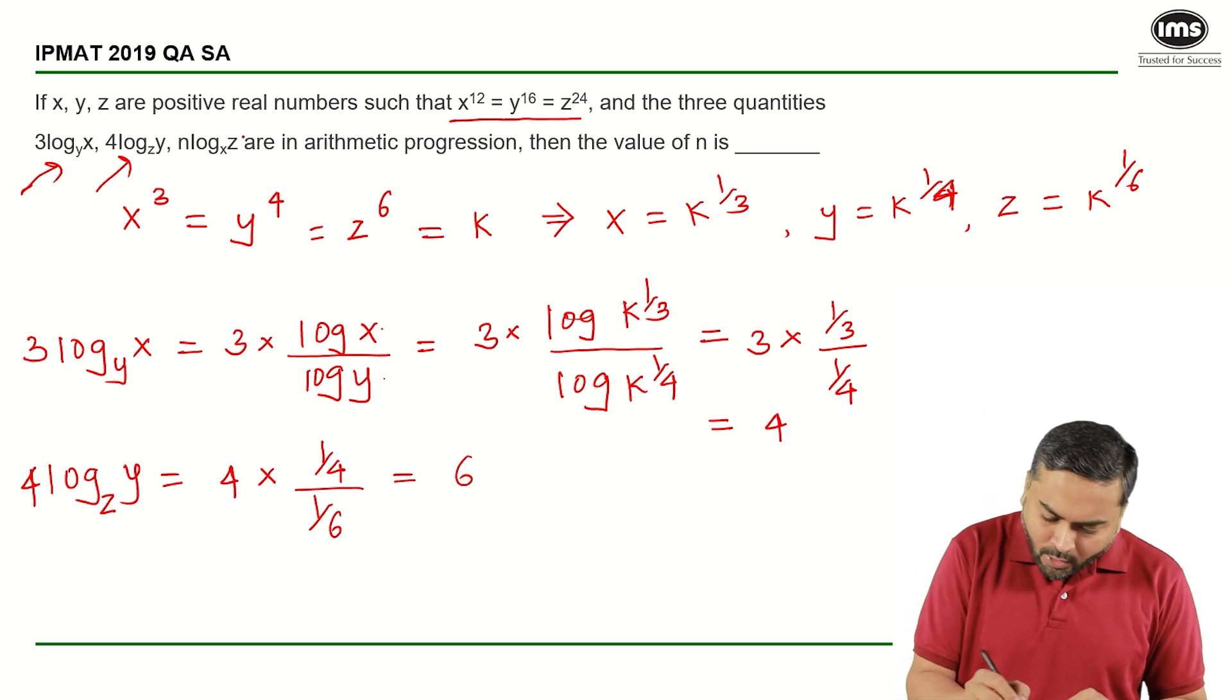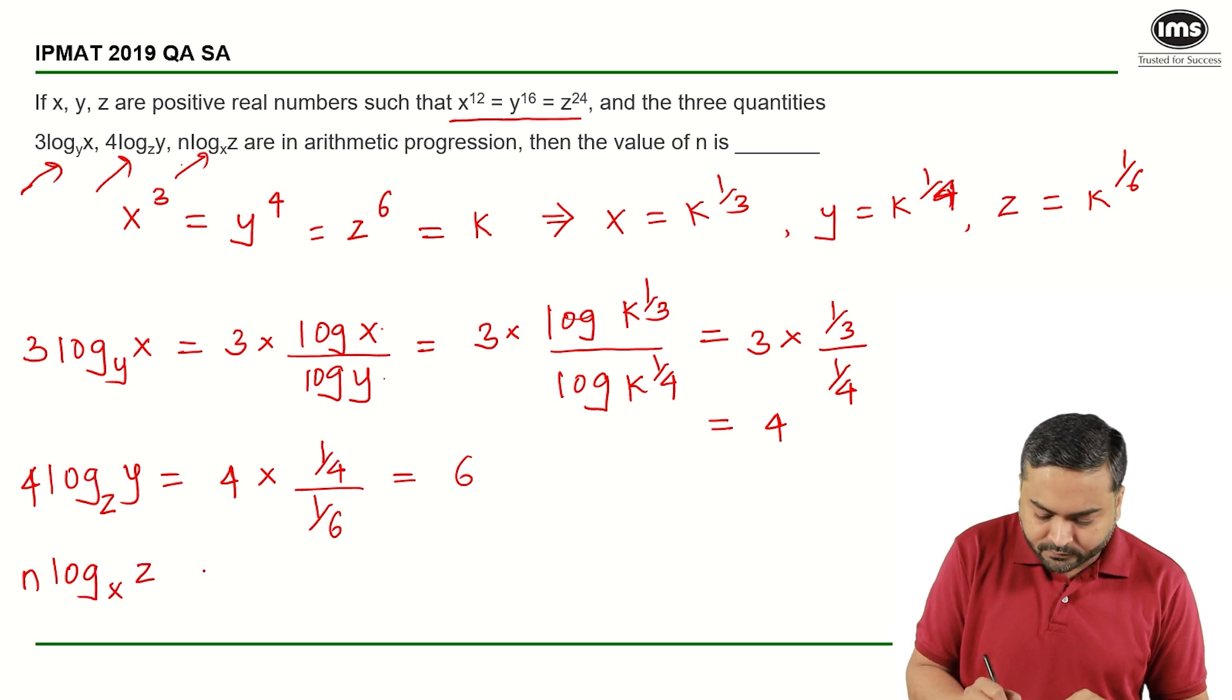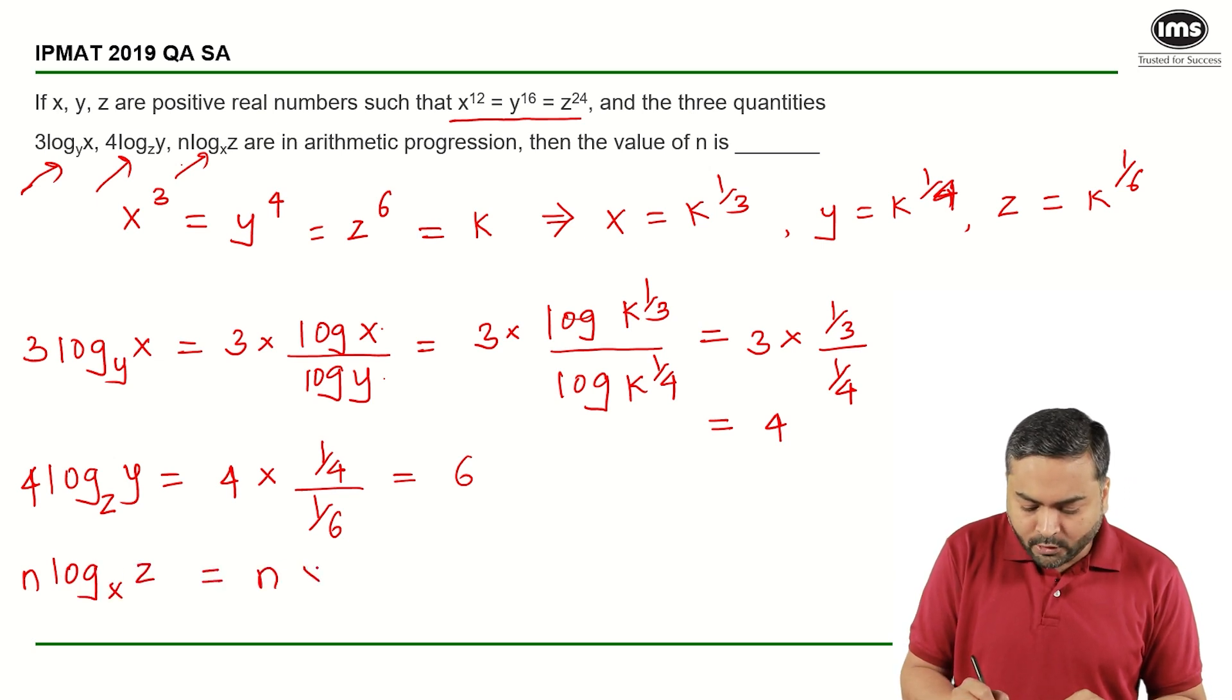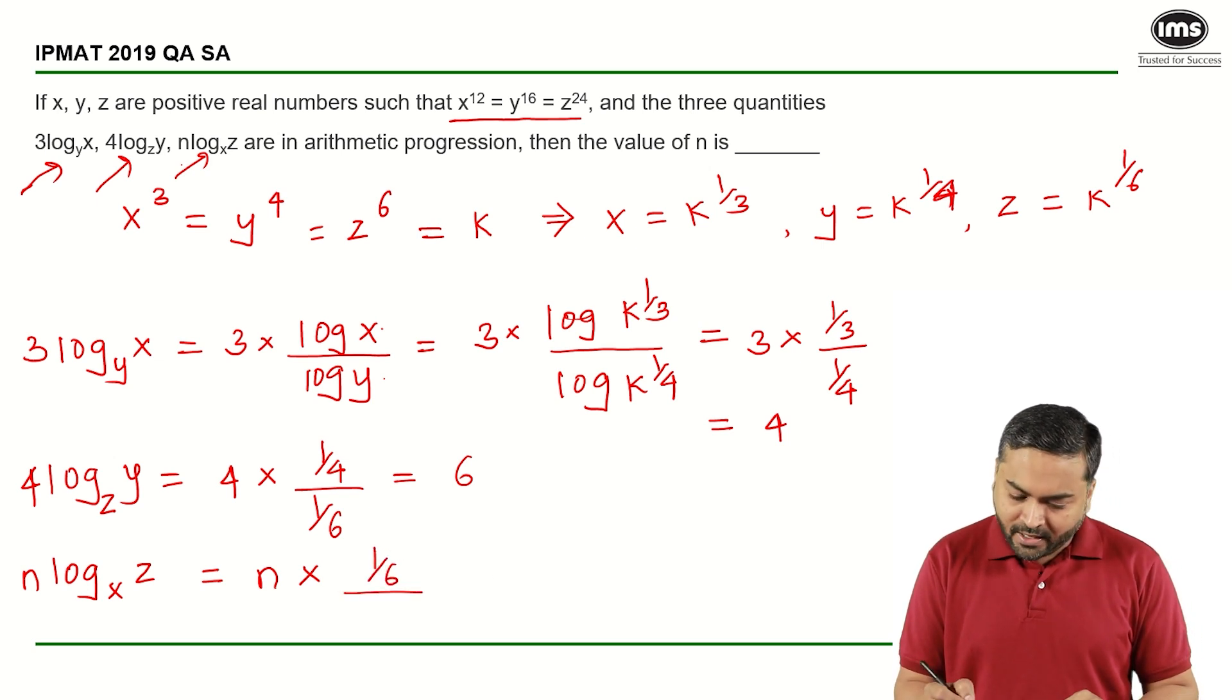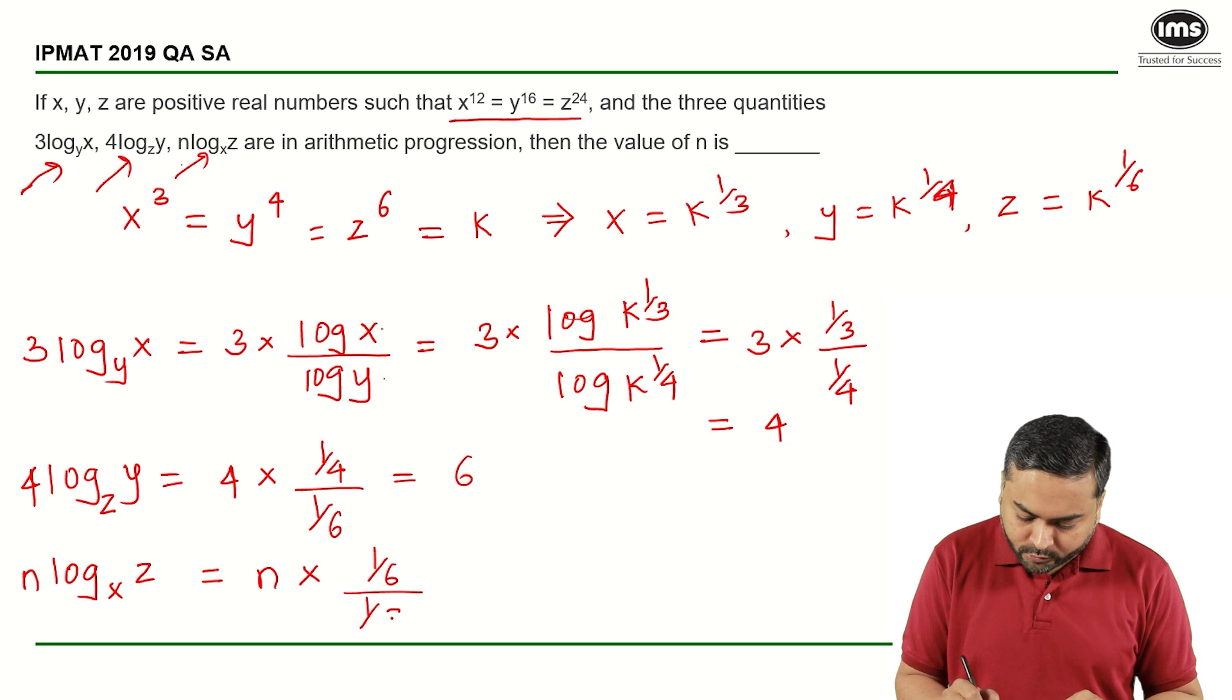And now let us find out the third value, which is n log z to the base x. This will be n times 1 upon 6, and x is 1 upon 3, so it is 1 upon 3. On simplifying, what do I get? I get this as n by 2.